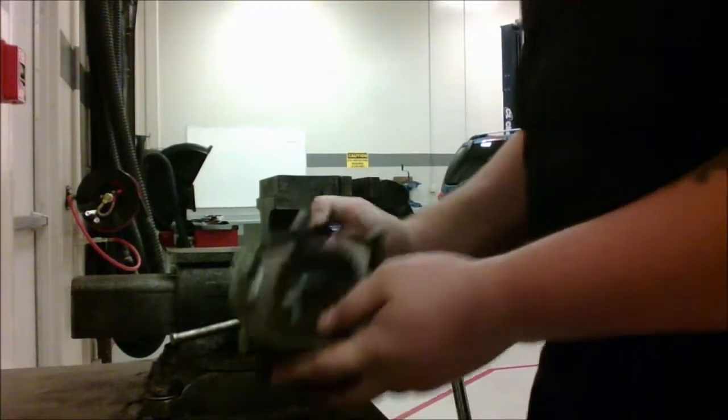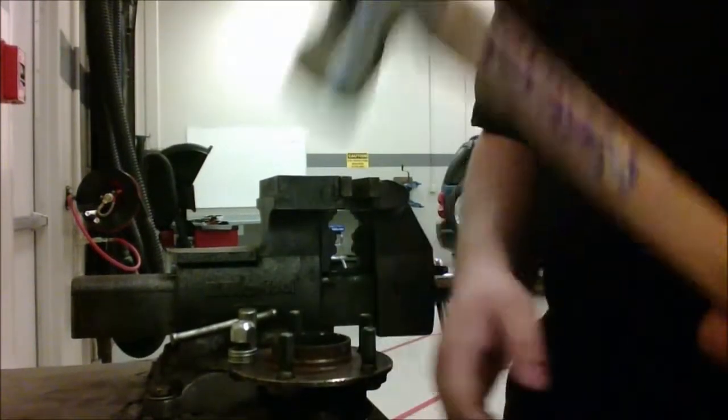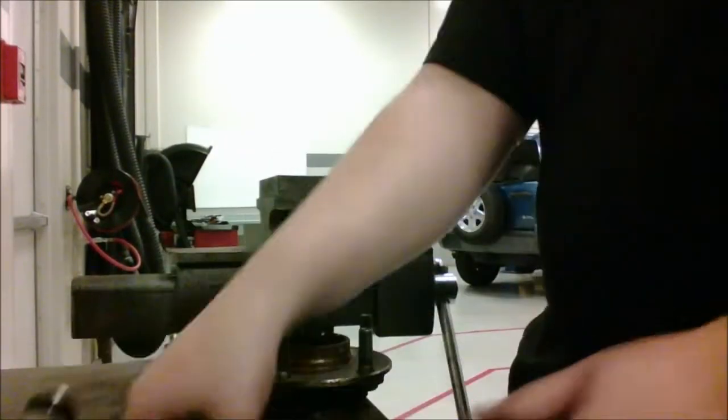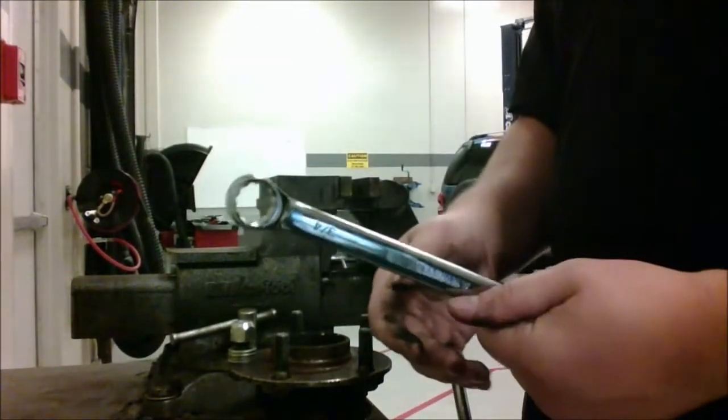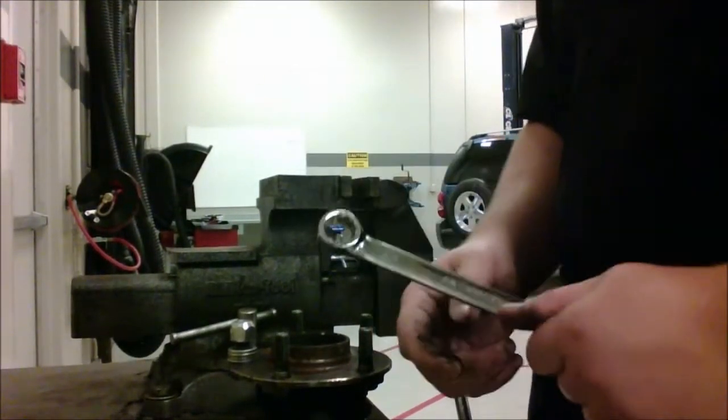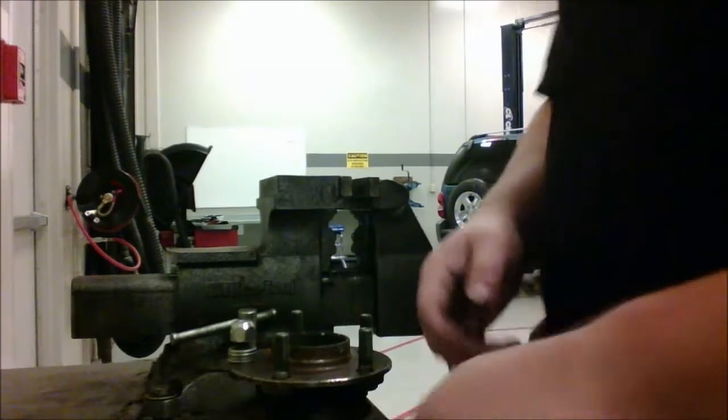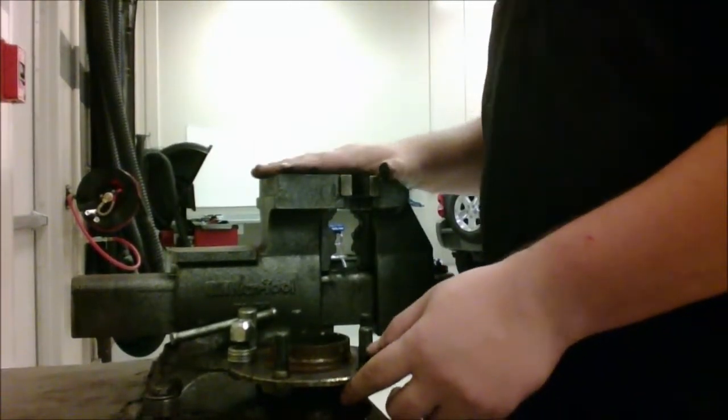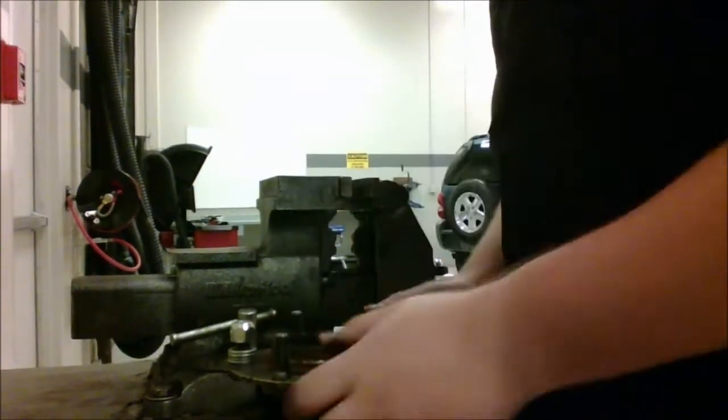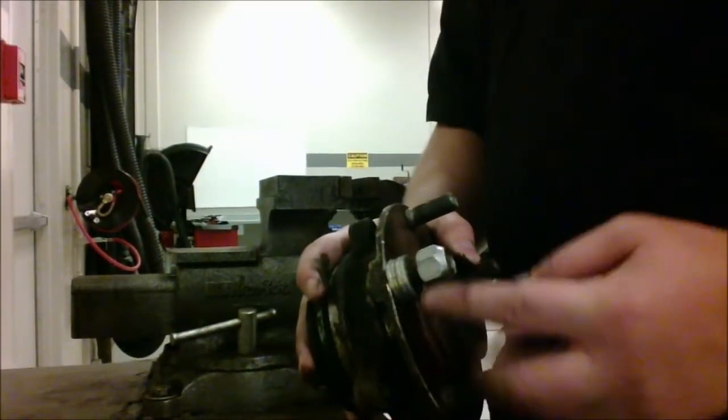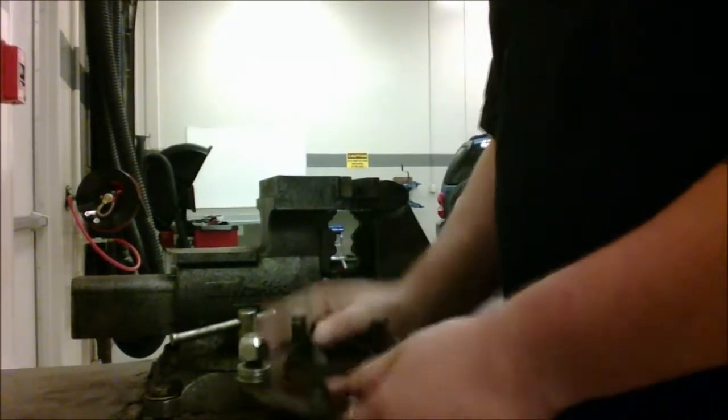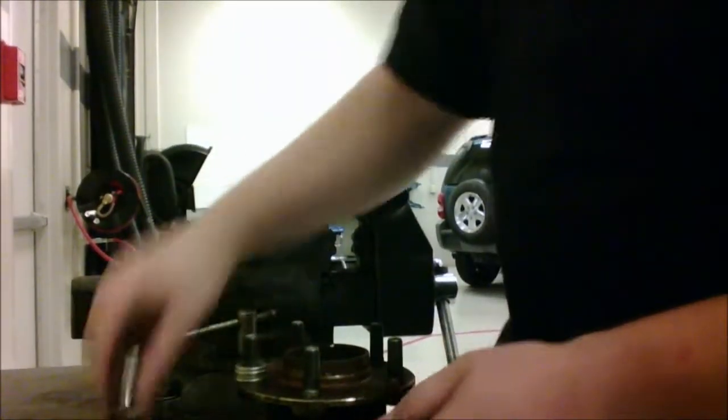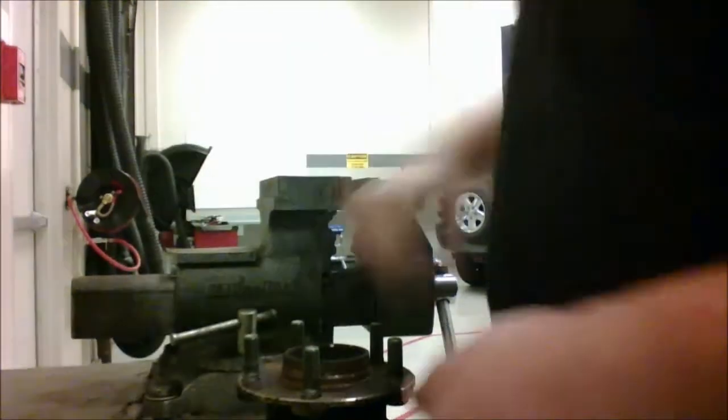What we're going to need for this project is some type of hammer, ball peen does it. You're going to need the proper wrench for the nut, and here we've got three quarters, and you're going to want a vise in order to hold it. And you're going to need some washers and a lug nut. You don't need all the lug nuts, but one lug nut works just fine.